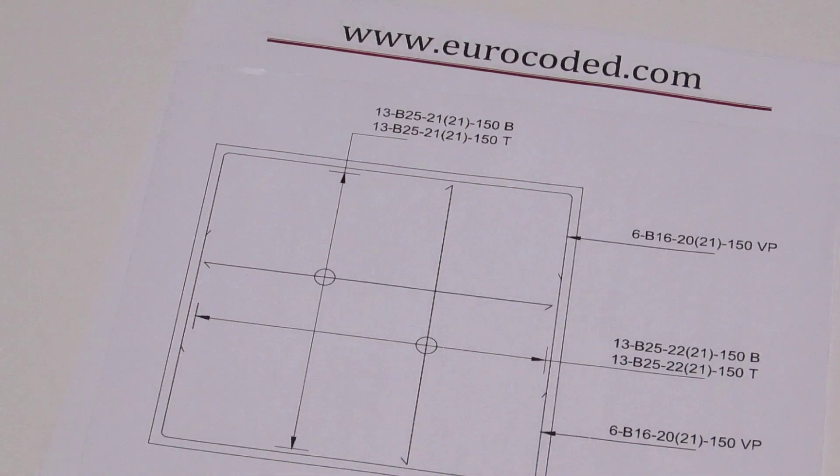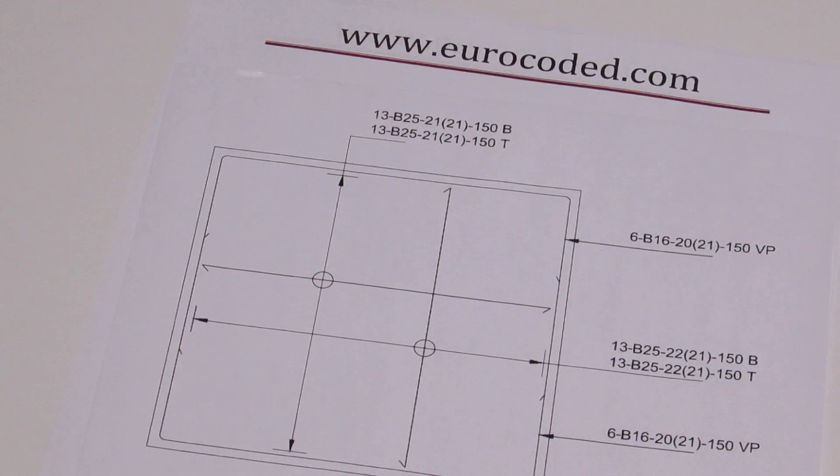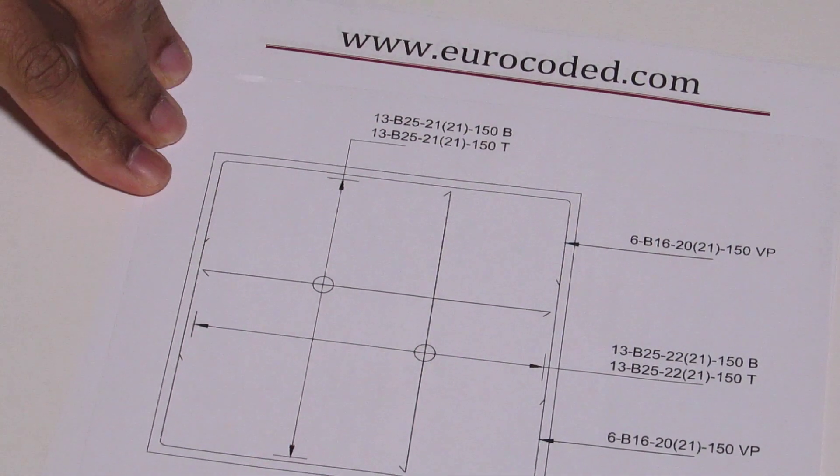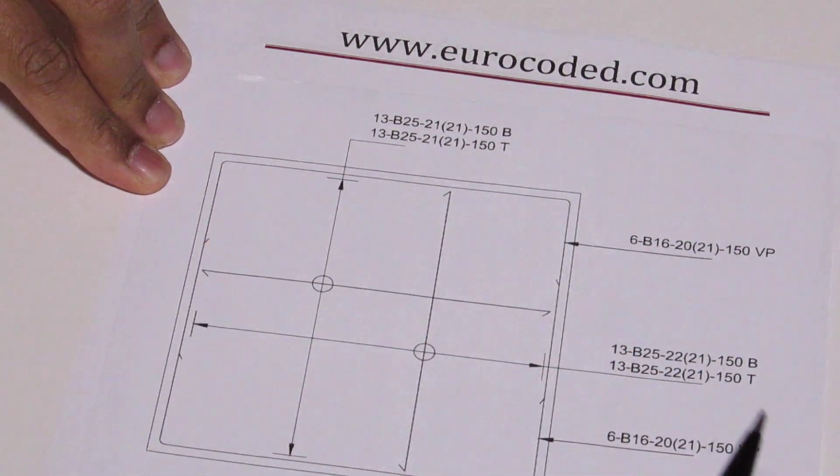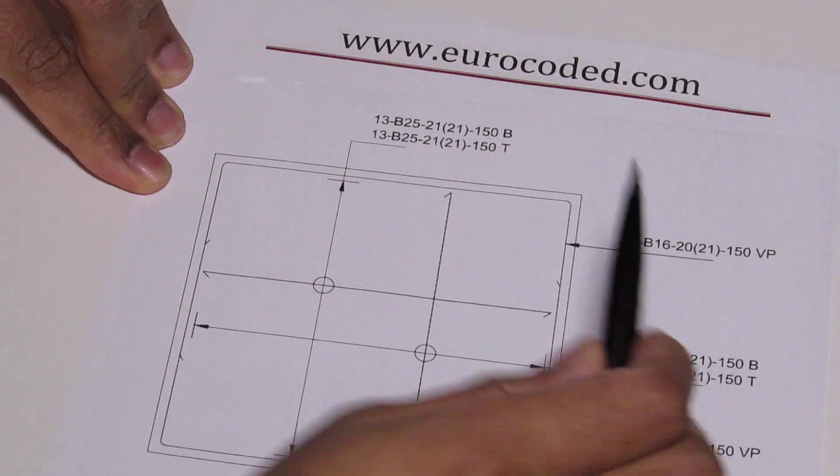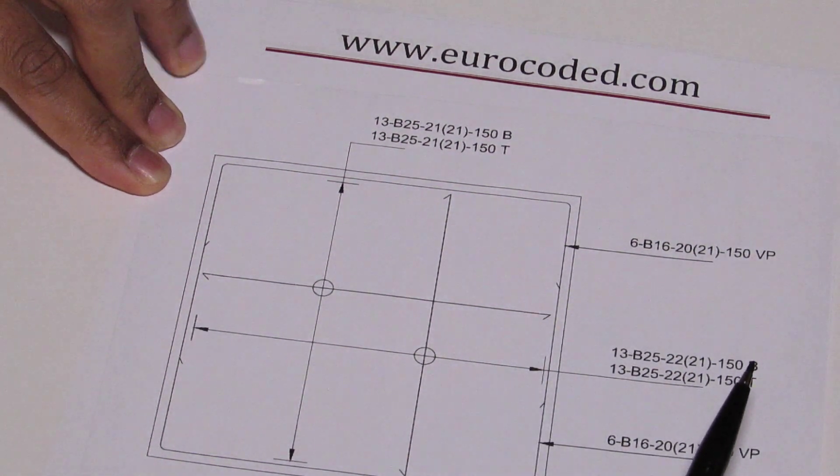On a structural drawing it is very important to read reinforcement notation. In this particular example there are numbers written in a certain pattern here. It will make sense once I explain what they stand for.